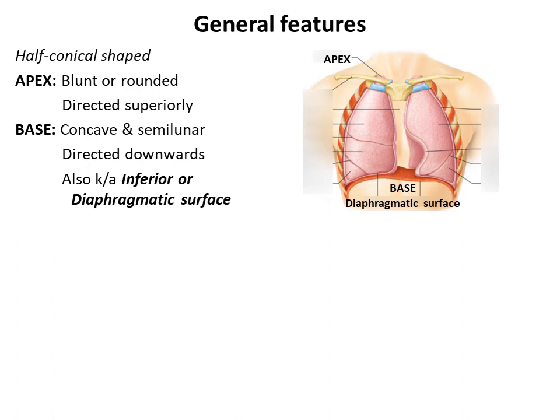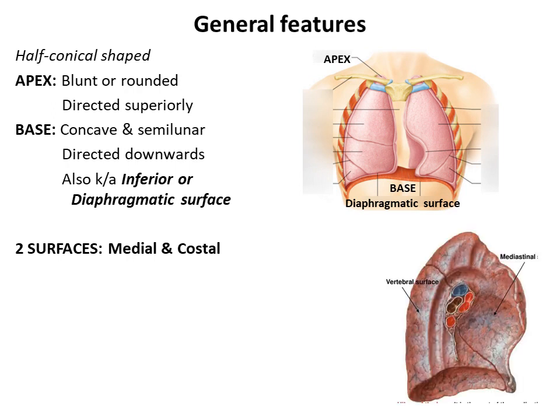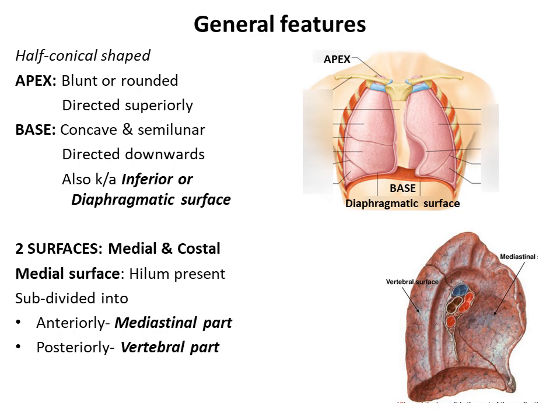Apart from the inferior or diaphragmatic surface, there are two more surfaces in the lungs: the medial and costal surface. The medial surface is comparatively flat and bears a number of impressions. It can be identified by the presence of the hilum, that is the area where the structures enter or leave the lung. The medial surface can be further subdivided into a large anterior part related to the mediastinum called the mediastinal part, and a small posterior part related to the vertebrae called the vertebral part.